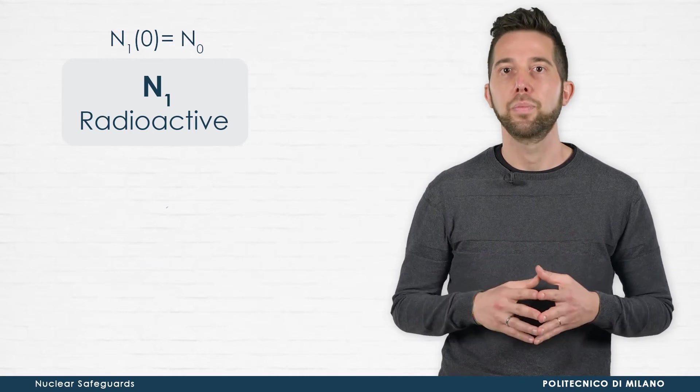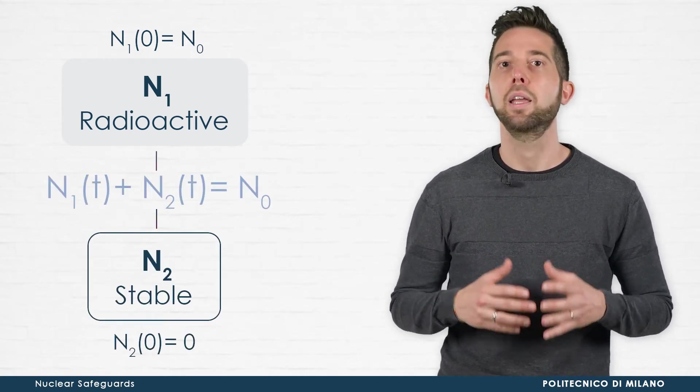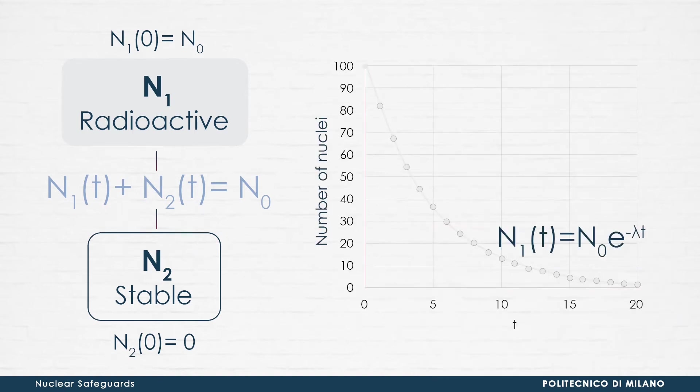a sample of radioactive nuclei N1, which transform, through a unique type of process, into stable nuclei N2, by starting from an initial condition where only N0 nuclei of type 1 are present. The daughter nuclei N2 will grow exponentially from 0 to N0,